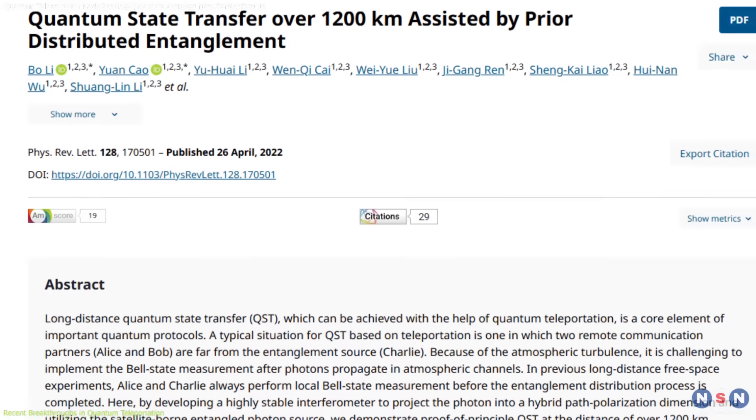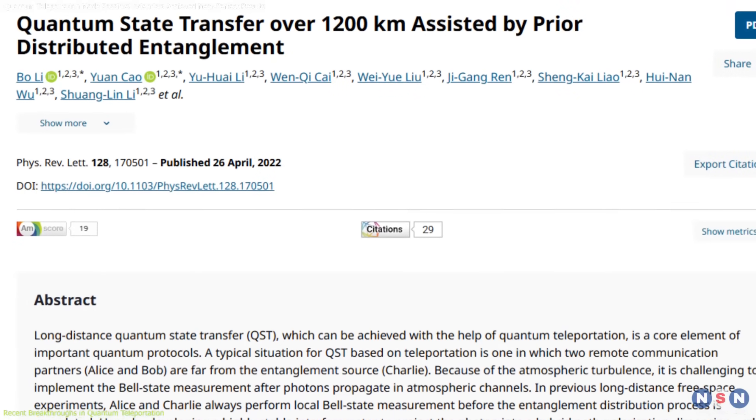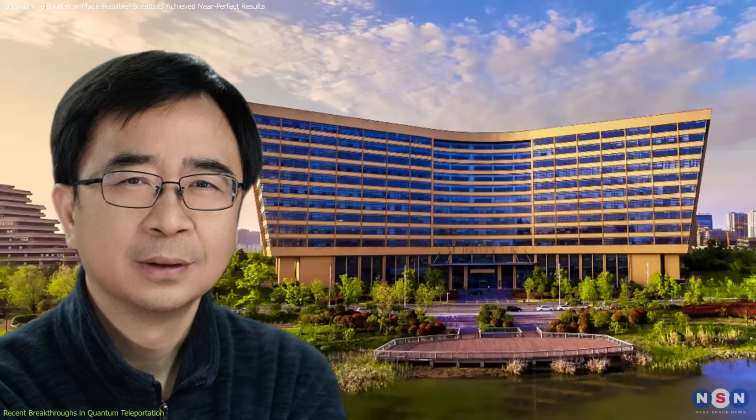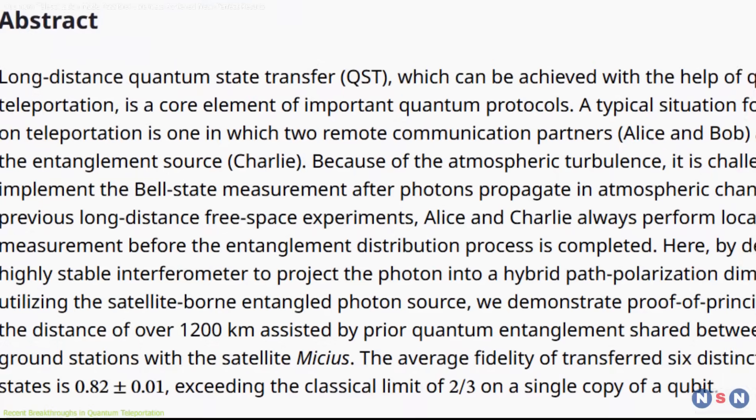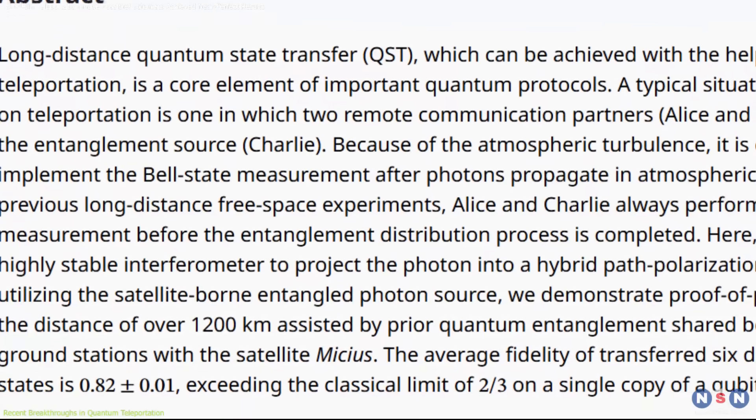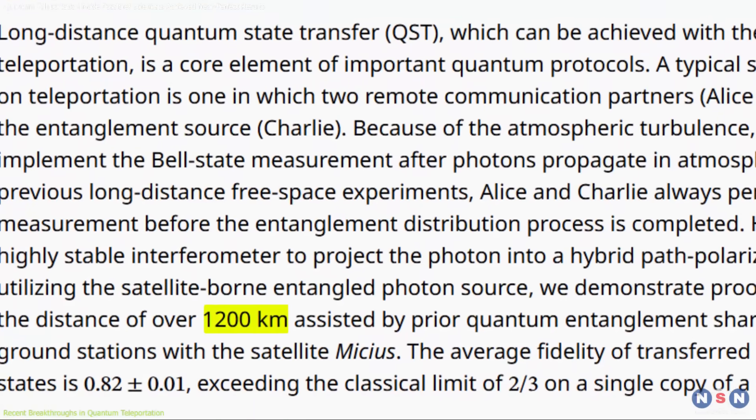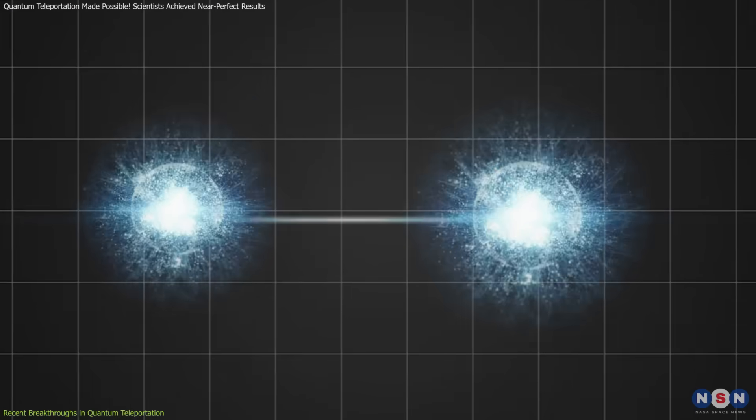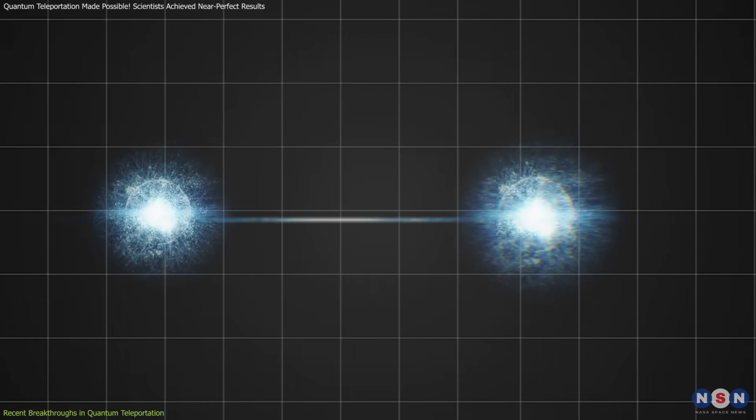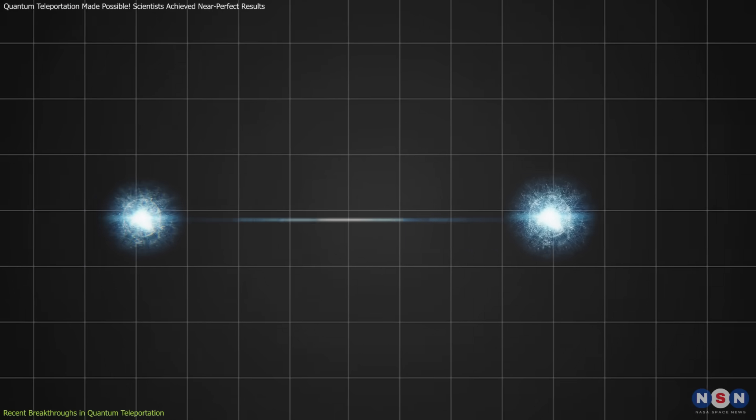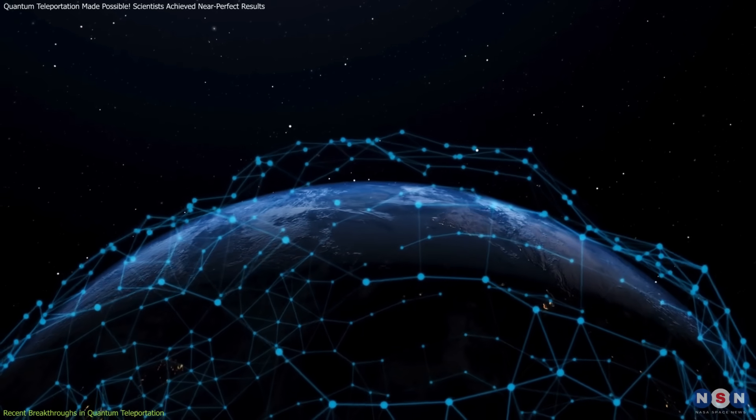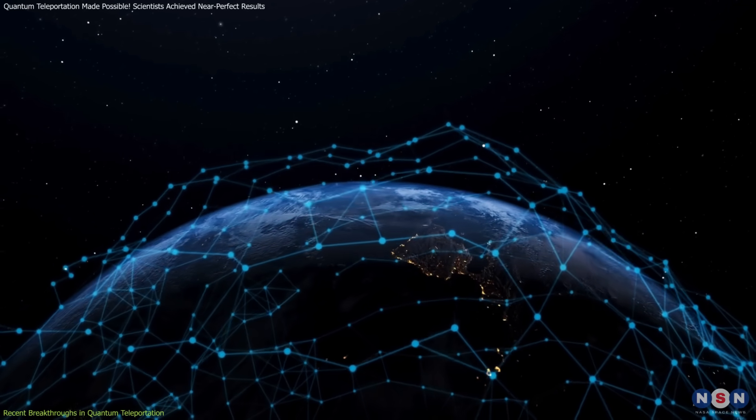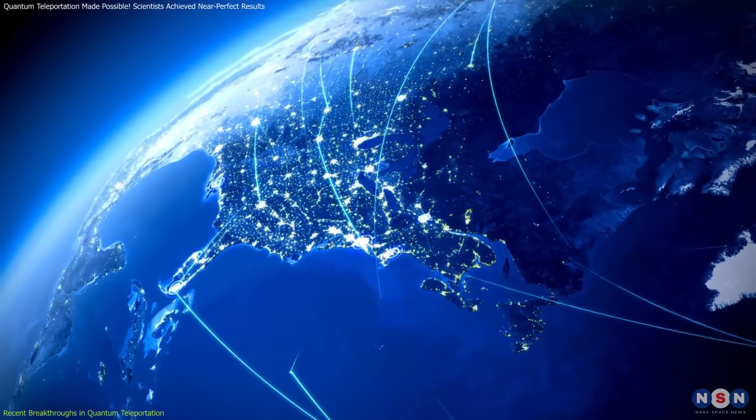In April 2022, a team led by Dr. Jianwei Pan at the University of Science and Technology of China achieved a monumental milestone. Using entangled photons, they transmitted quantum information over 1,200 kilometers via satellite. This experiment demonstrated that entanglement could remain intact over unprecedented distances, opening the door to global-scale quantum communication. But what's truly exciting is the rapid progression since then.